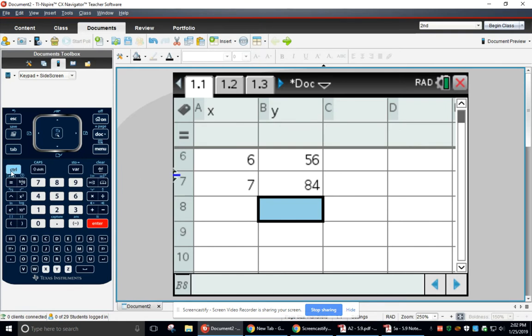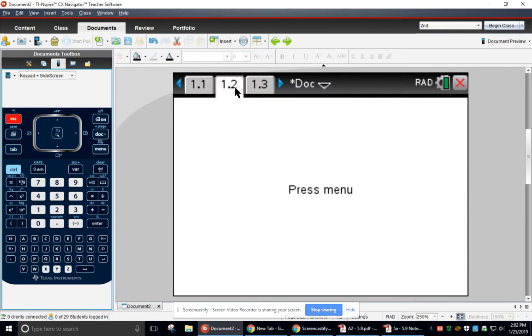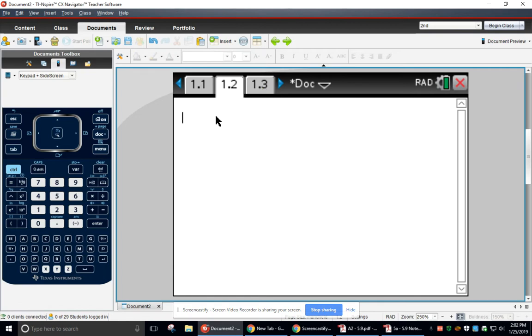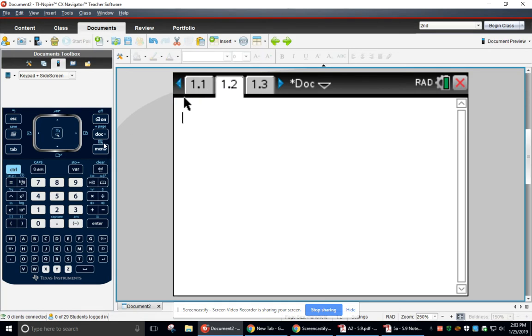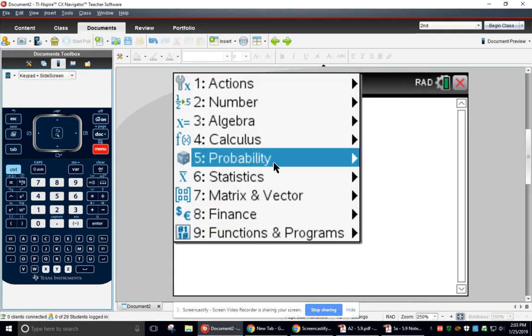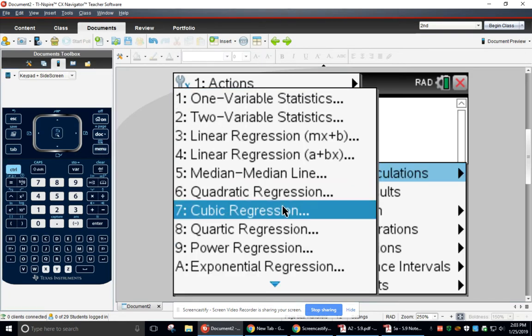And then the next step you're going to do is you're going to go Control, Dock, and then you'll do 1. And then when you press 1, it adds this blank calculator screen. So when you do the Control, Dock, 1, it's linked together, and then you can do Menu, Statistics, Stat Calculations, and then we're going to go to Cubic Regression.